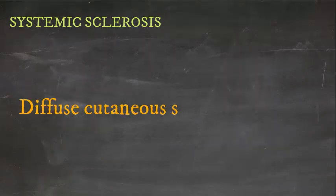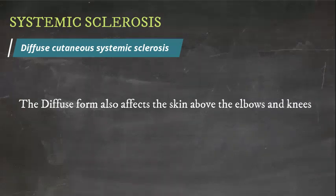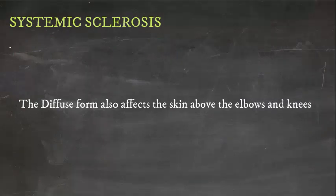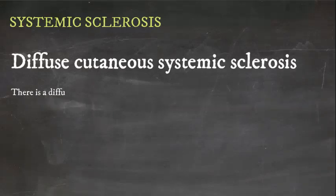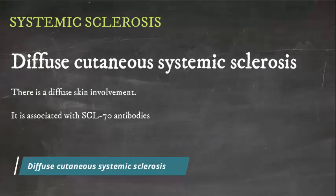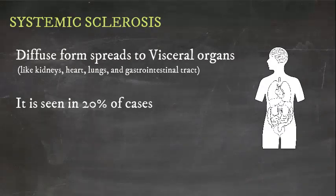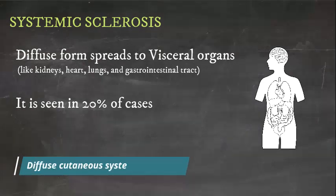In diffuse cutaneous systemic sclerosis, there is diffuse skin involvement above the elbows and knees. It is associated with SCL-70 antibodies. Moreover, it spreads to visceral organs like kidneys, heart, lungs, and gastrointestinal tract. This form is seen in 20% of cases.